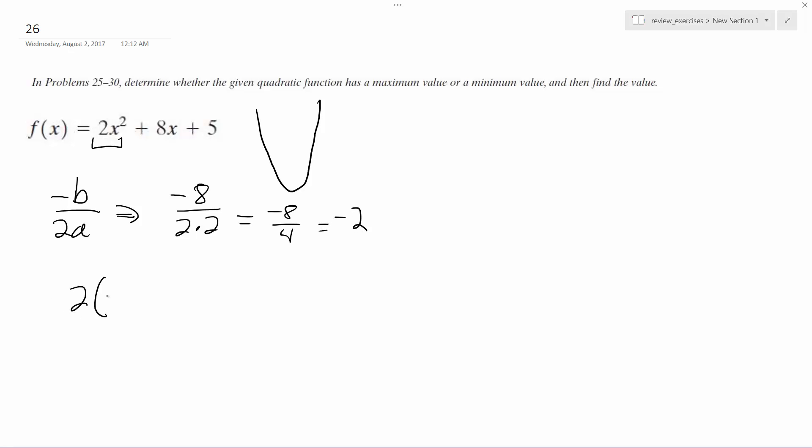All right, so I plug in negative 2, so 2 times negative 2 squared plus 8 times negative 2 plus 5. So I end up getting 2 times 4 minus 16 plus 5, so that's 8, negative 8 plus 5.